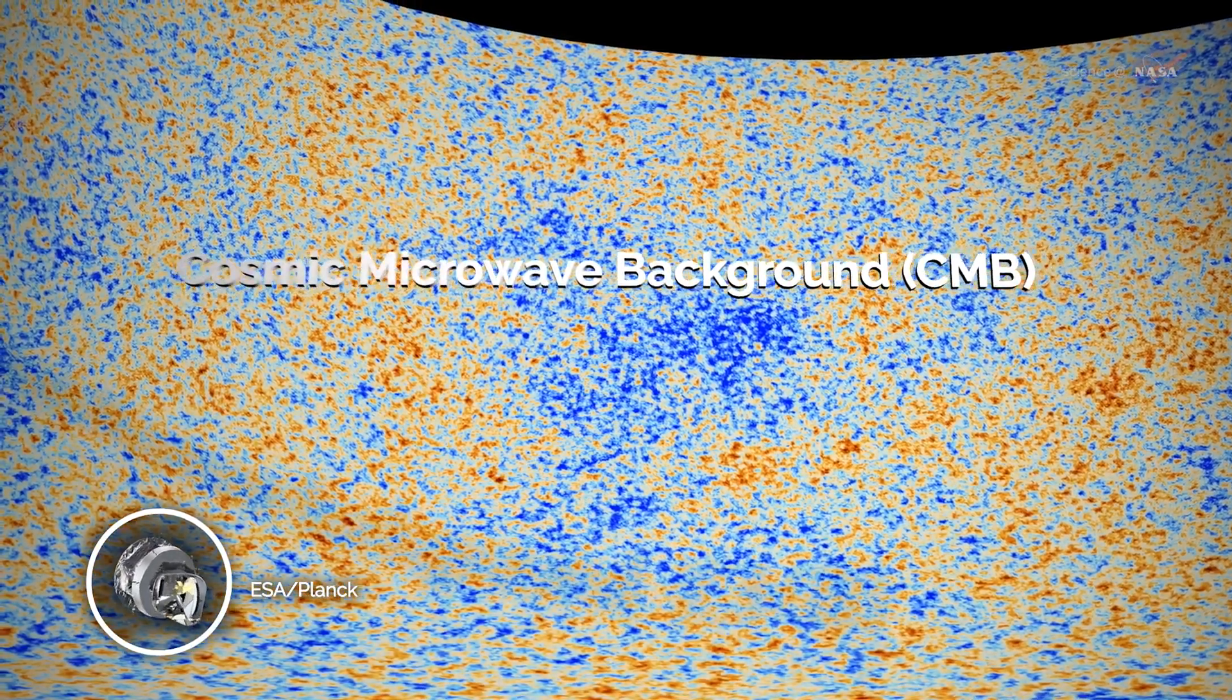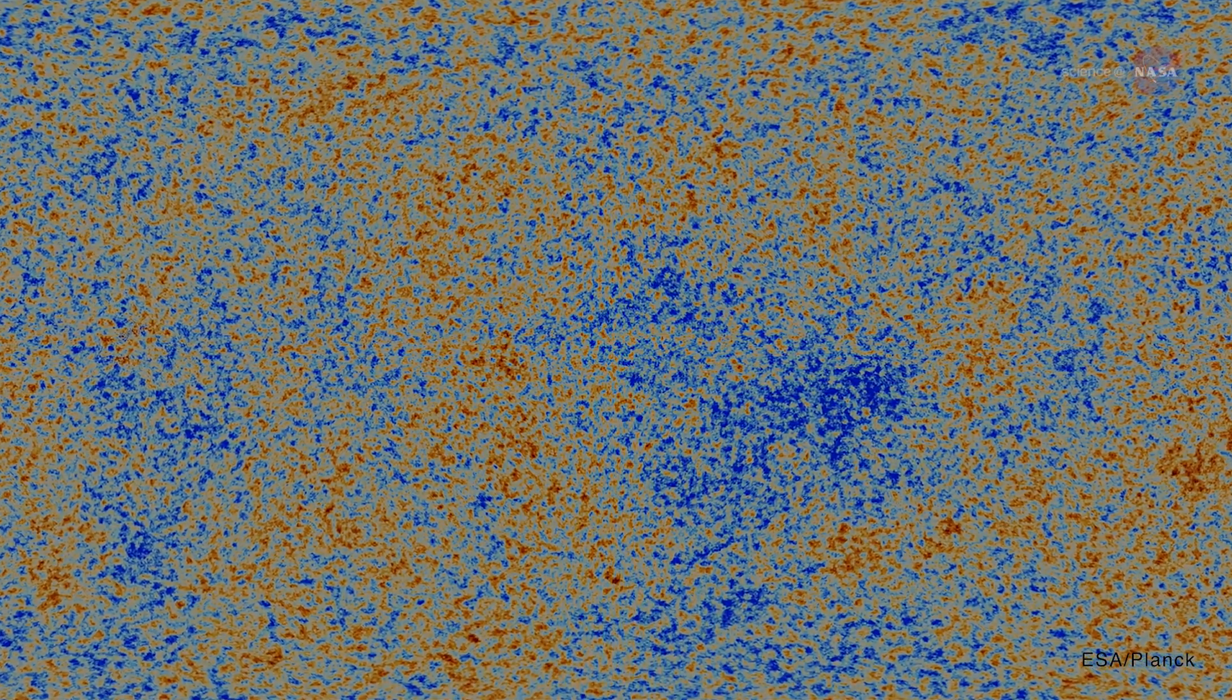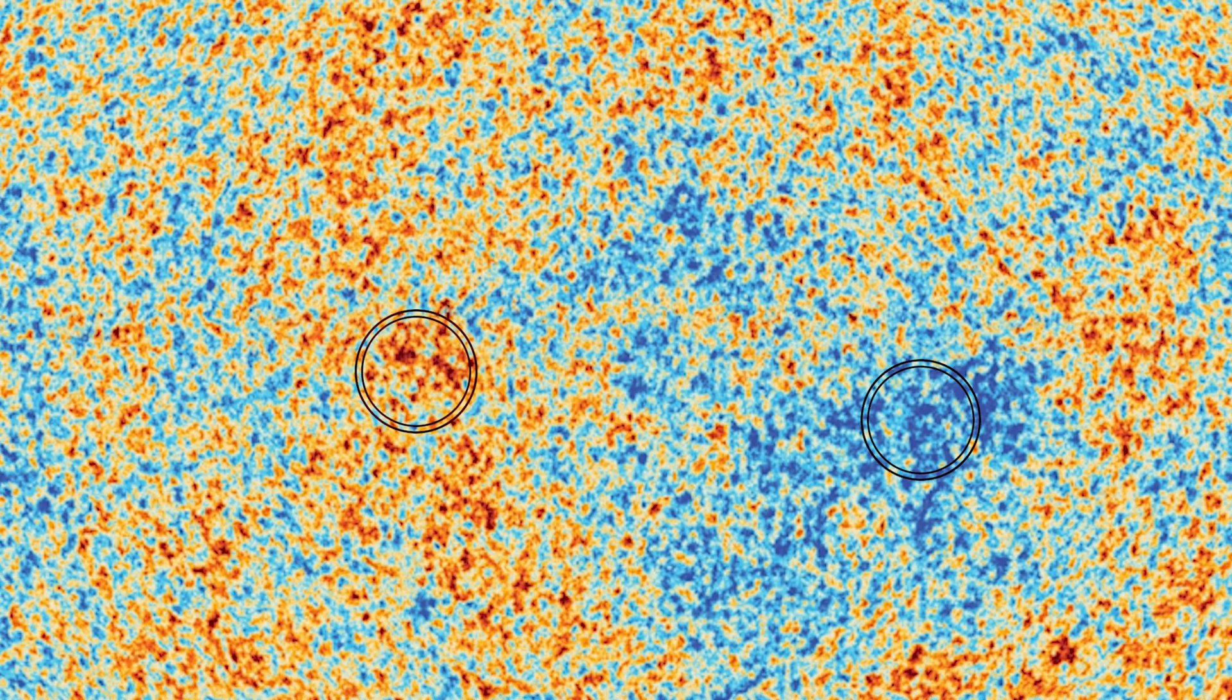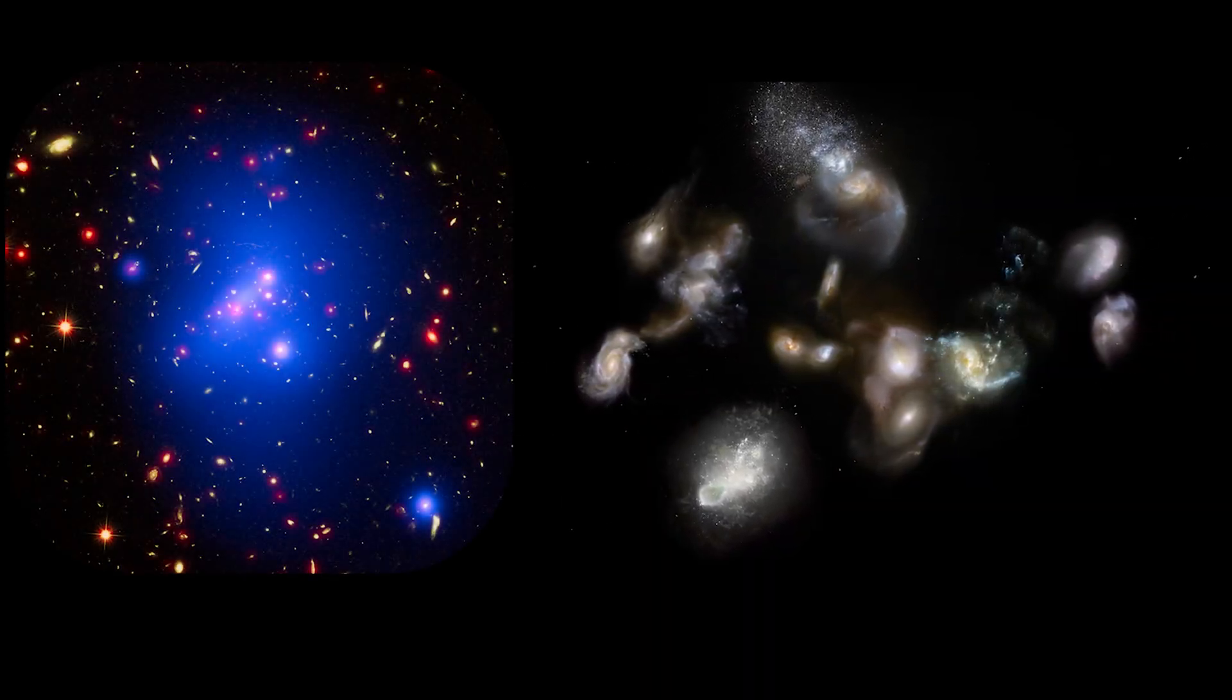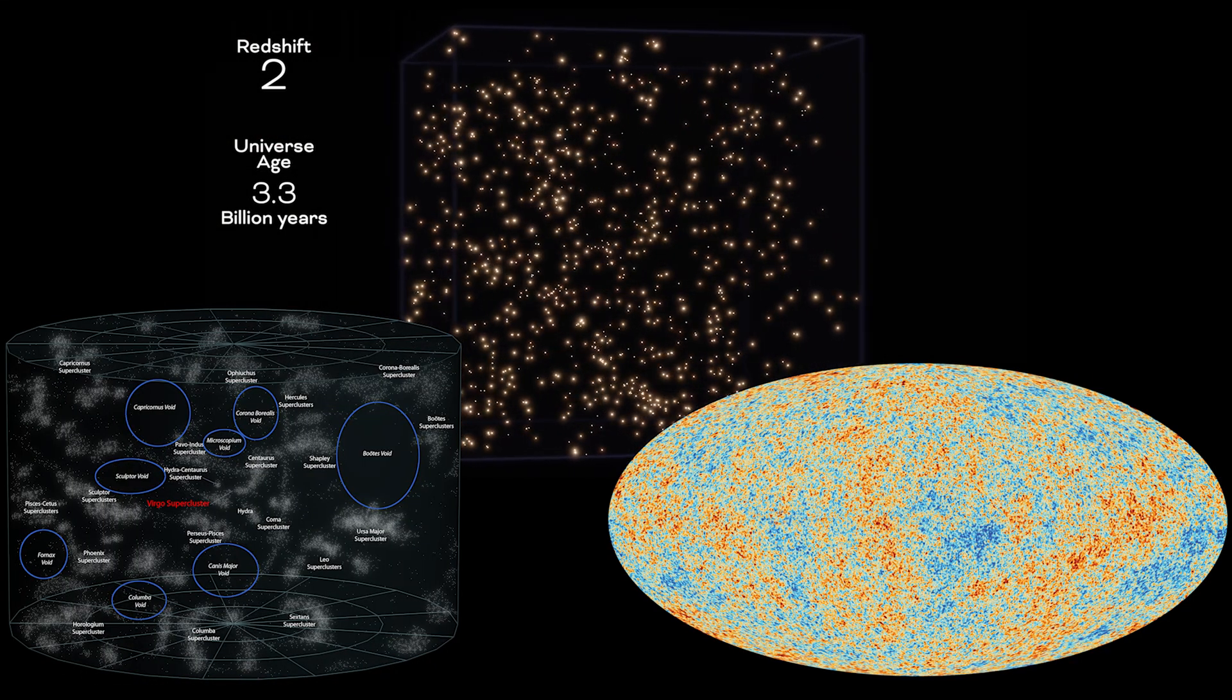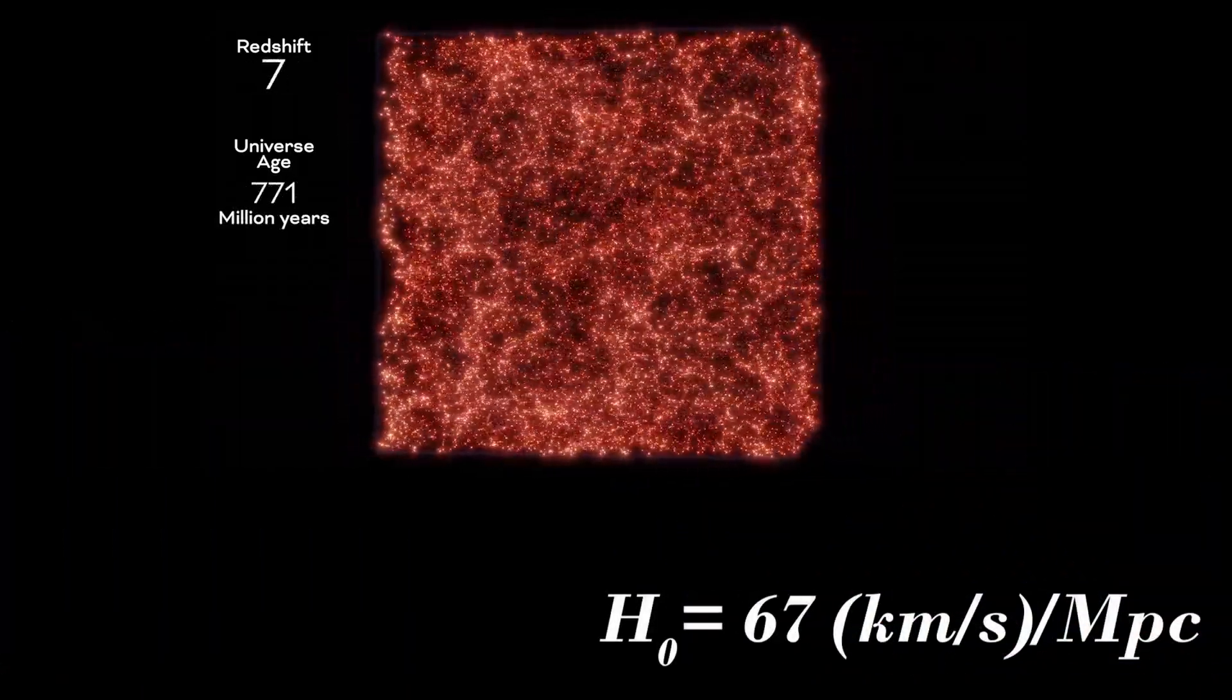The universe after the Big Bang was hot and dense. The light couldn't freely travel through space. After cooling down, the photons started traveling. These photons give us a rough view of the universe just after Big Bang. It's called the cosmic microwave background, or in short, CMB. The red areas indicate regions with higher matter density, while the blue areas represent regions with lower matter density. Today these red spots have taken the shapes of galaxy clusters, while the blues have become voids where dark energy dominates. By comparing today's universe with the universe after Big Bang, scientists can calculate the expansion rate of our universe, the Hubble constant. Its value is 67 kilometers per second per megaparsec.